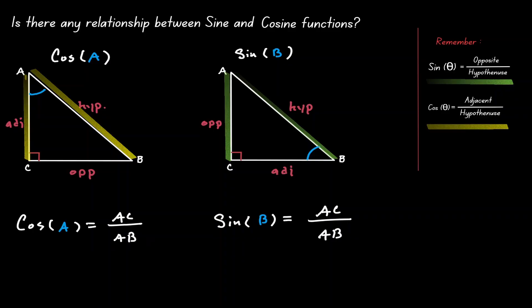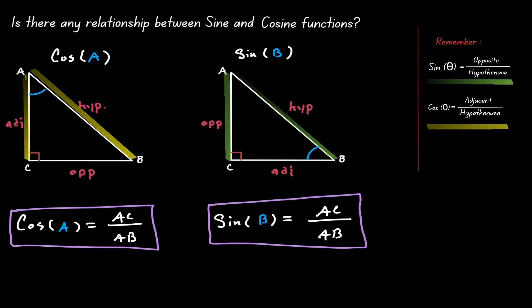Let's look at our results. The cosine of angle A is defined as AC over AB, and the sine of angle B is also defined as AC over AB. So if they both give you the same ratio, then we can say that those two functions are equal to each other.